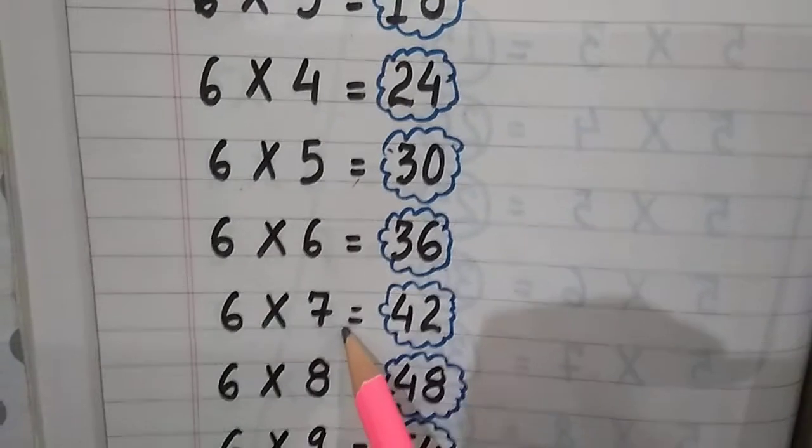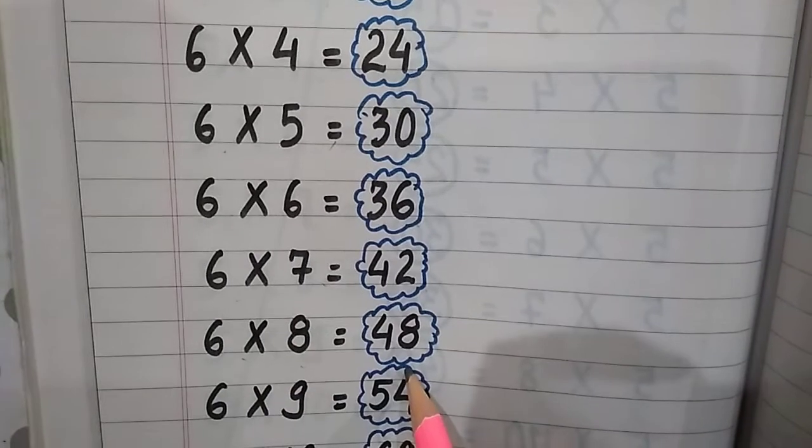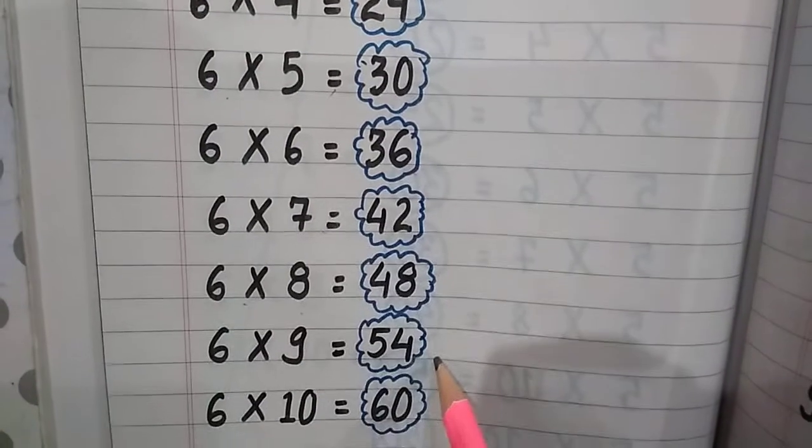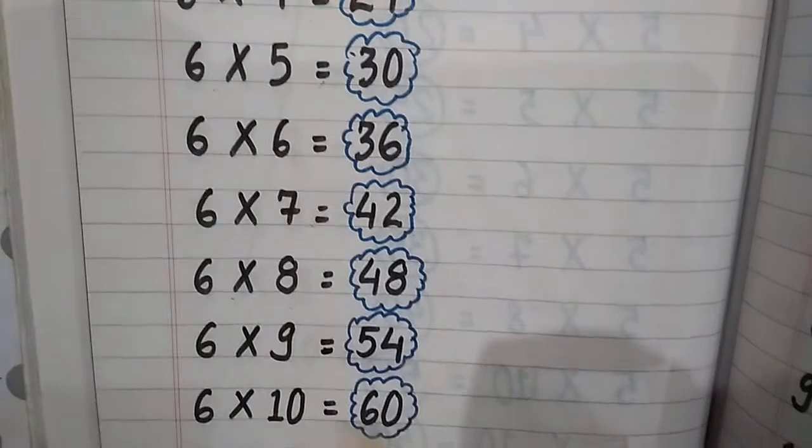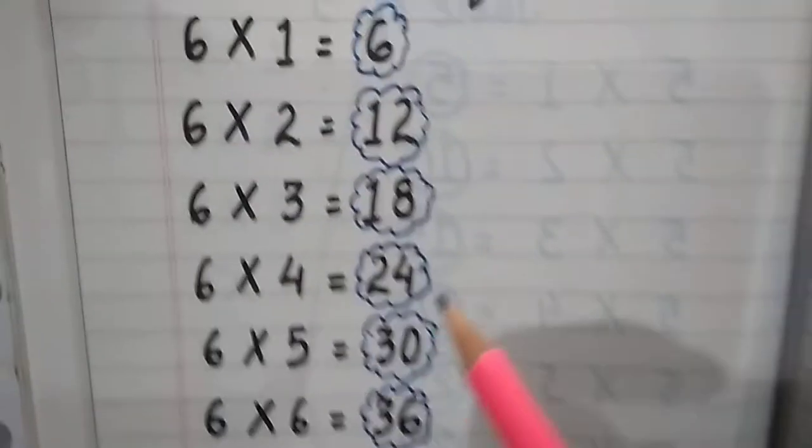6×7=42, 6×8=48, 6×9=54, 6×10=60. So this is the table of 6.